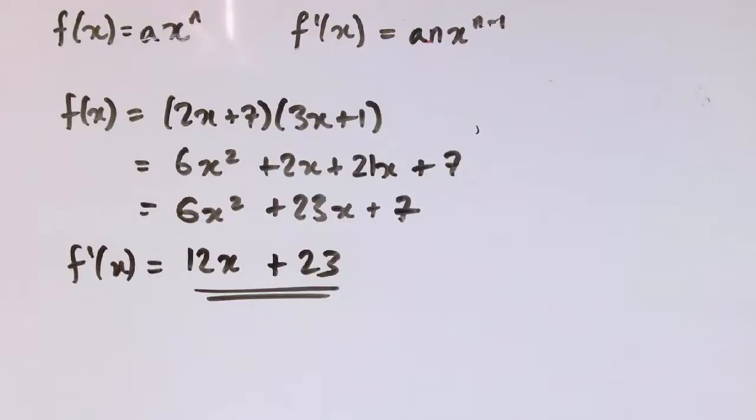So if you now multiply it out, differentiate term by term, this is much quicker than using the product rule anyway, so this is the best way to do these examples.